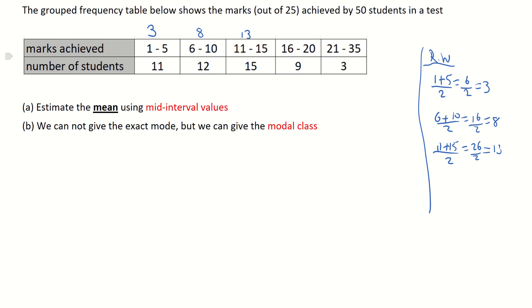And I'm just writing them then above on my table. The mid-interval value of 16 and 20, adding 16 and 20 I get 36, dividing 36 by 2 and I'm getting 18. And the final one is 21 marks to 35 marks, adding those together and dividing by 2, I'm getting 56 over 2, and dividing 56 by 2 I'm getting 28. So the mid-interval value here is 28.